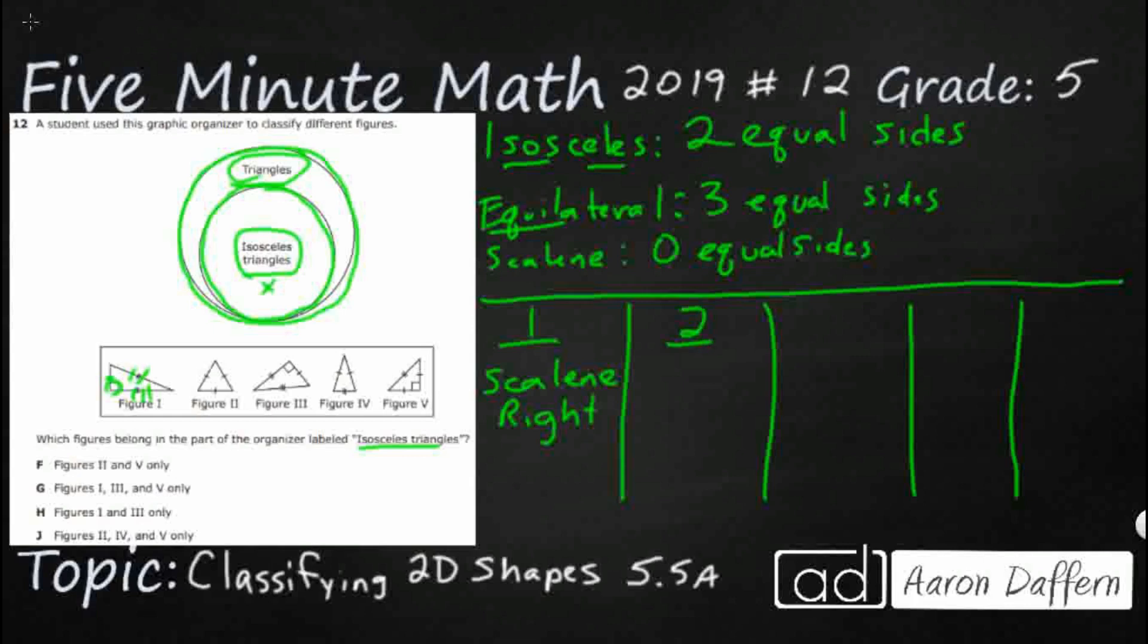Two, notice we've got three different hash marks, but they're all just single, which means all three sides are the same. So we could call this both isosceles because it's got at least two. We can also call this equilateral.